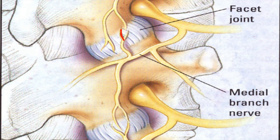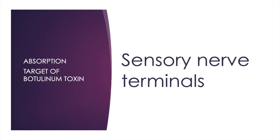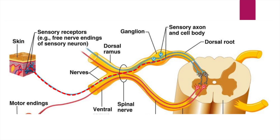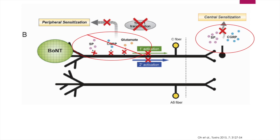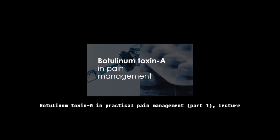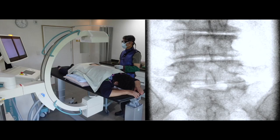The sensory nerve terminals of the facet joint pass neurotransmitters through the medial branch to the dorsal root ganglion and dorsal horn. The sensory nerve terminals are an important target point for the botulinum toxin at the facet joint. The botulinum toxin absorbed in the sensory nerve terminal will be transported to the ganglion and dorsal horn. So the botulinum toxin achieves analgesic action at the dorsal root ganglion and spinal cord level. If you missed this video, please review it — then you will understand my logic of facet joint injection of botulinum toxin in spinal stenosis.